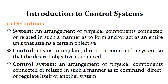We start with definitions. Definition number one is a system — a system is an arrangement of physical components connected or related in such a manner as to form or act as an entire unit that attains a certain objective. Definition number two is control — control means to regulate, direct, or command a system so that the desired objective is achieved.